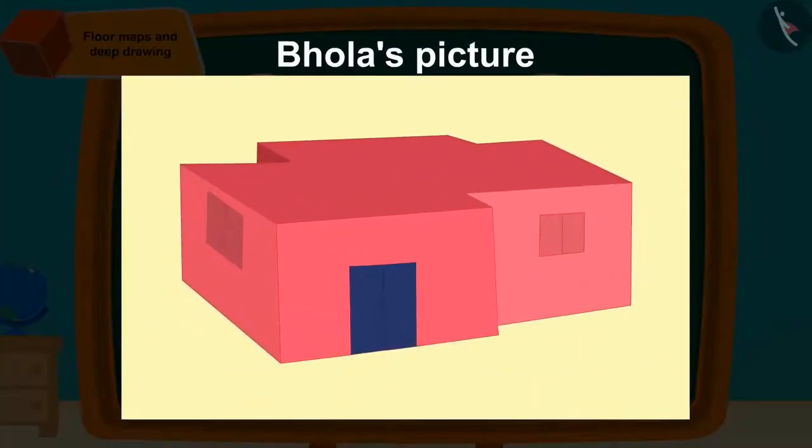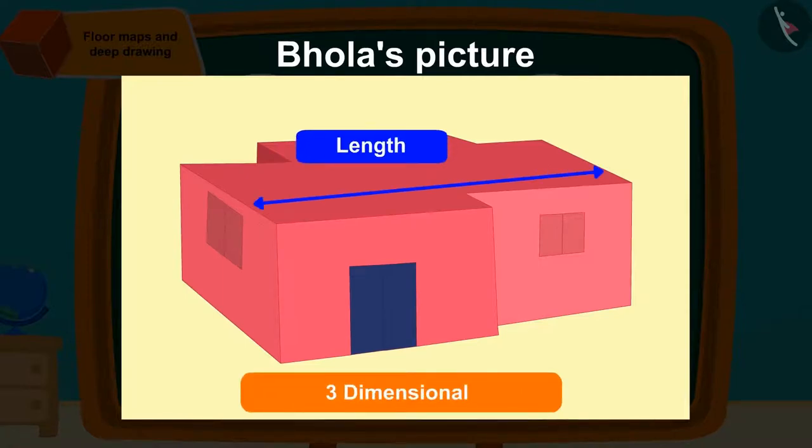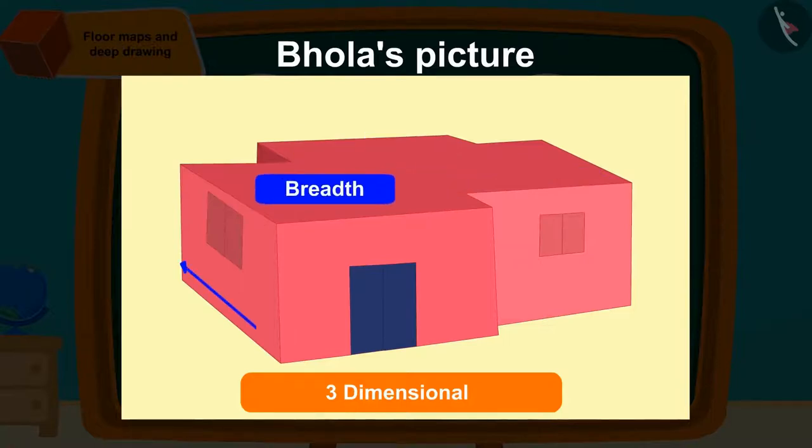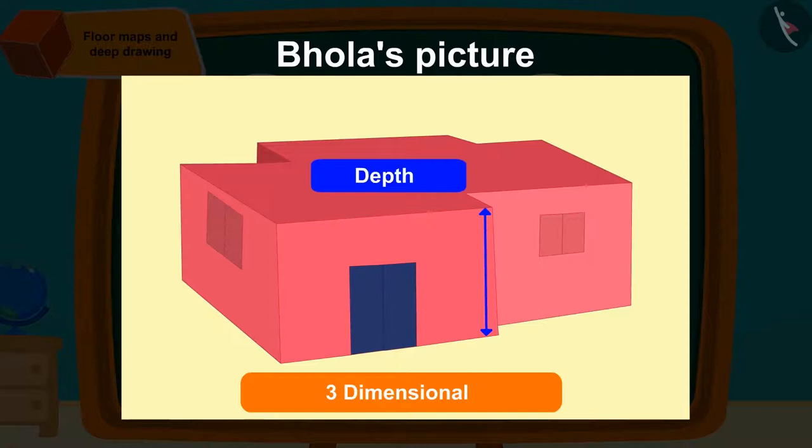This portrait is depicting all three dimensions. In this, we can also see the length, breadth and depth of the room. And that's how we can tell about the height of the room or window from the picture that Bholla had made. Since we can also estimate the depth, we call the pictures drawn by Bholla as deep drawings.